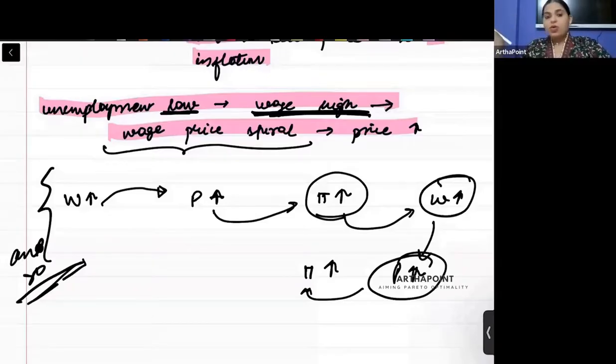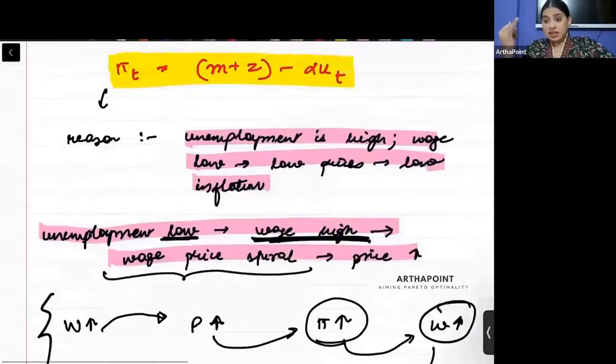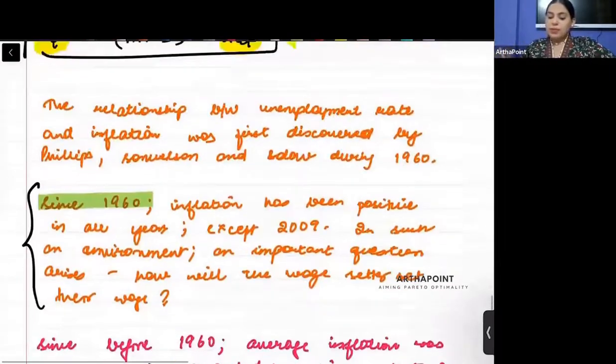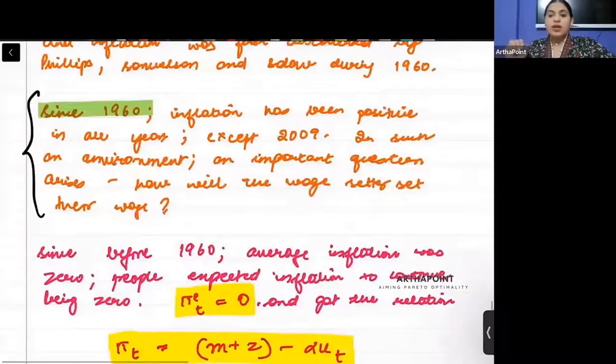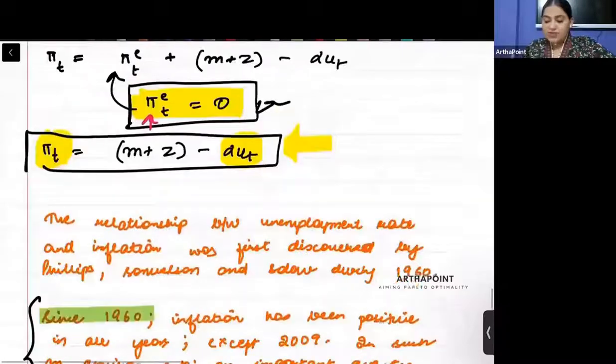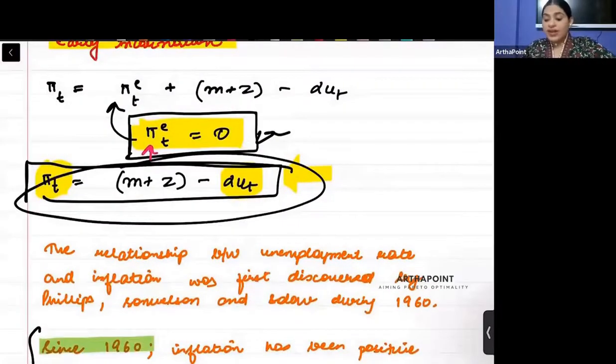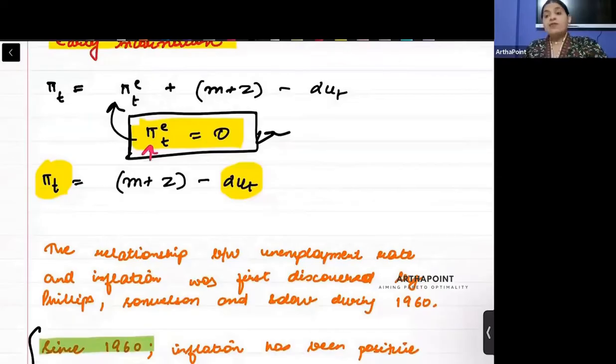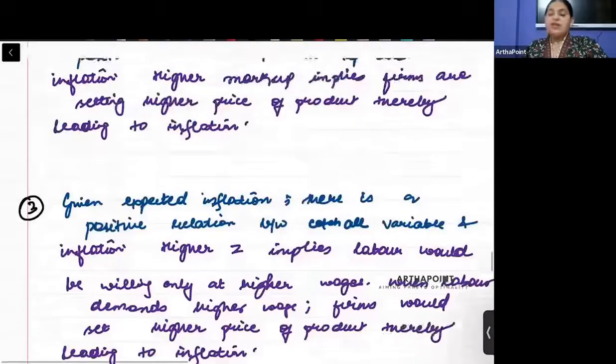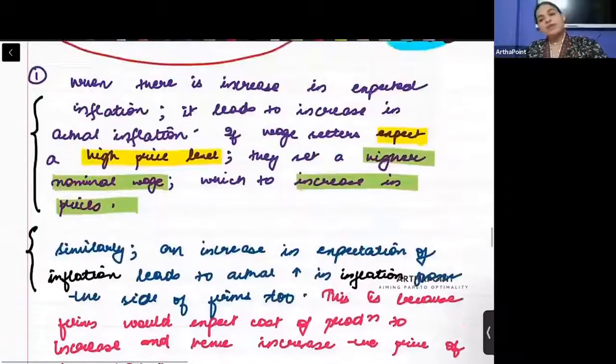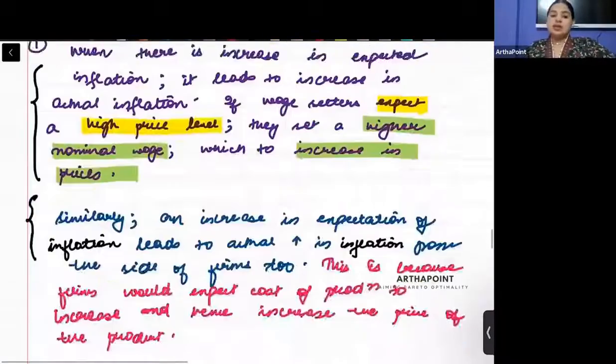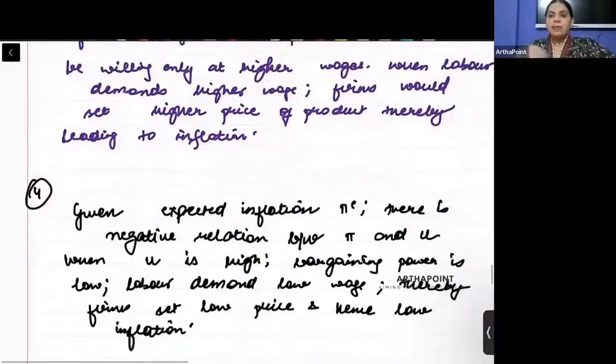We will stop here for today. We have understood what is Phillips Curve. We have understood the earlier incarnation of Phillips Curve by putting π^e as zero. Why did this relationship break and why did we take expectation into consideration? We will try and do that in the next class. Thank you.